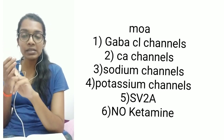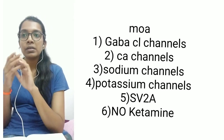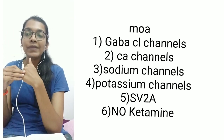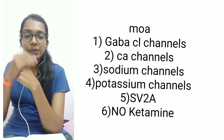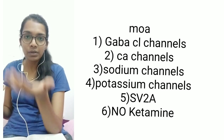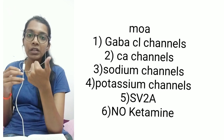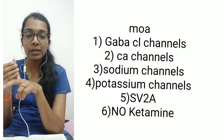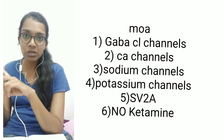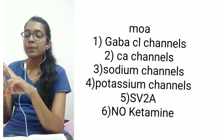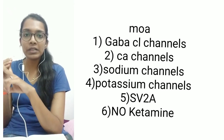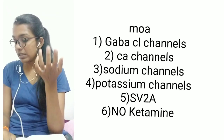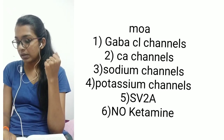Third, there will be stimulation of potassium channels. Fourth, they can act on presynaptic vesicles, specifically on proteins like SV2A, preventing the release of neurotransmitters. Fifth and sixth relate to agents like N2O and ketamine, which inhibit NMDA glutamate receptors, reducing glutamate activity — the main excitatory amino acid in the brain — or inhibit calcium channels. Fluorinated anaesthetics and barbiturates cause analgesia and amnesia.